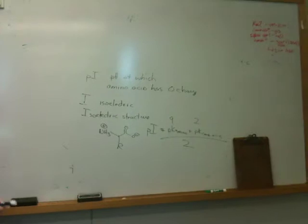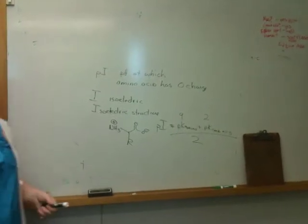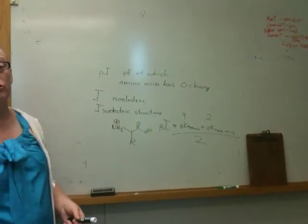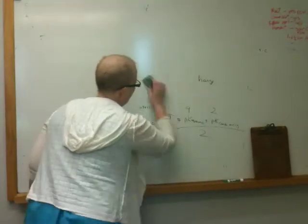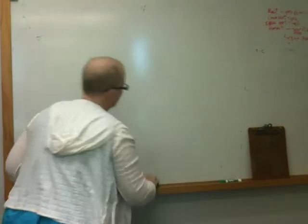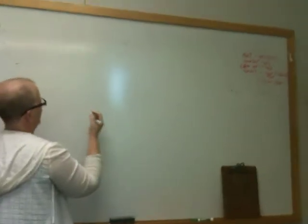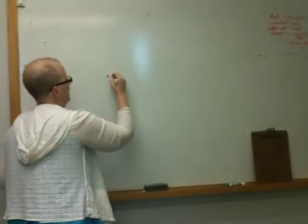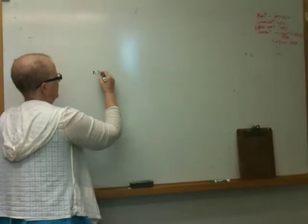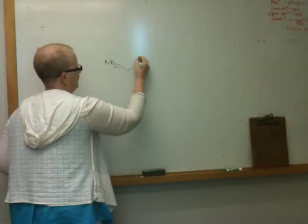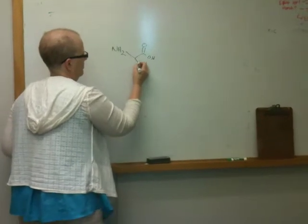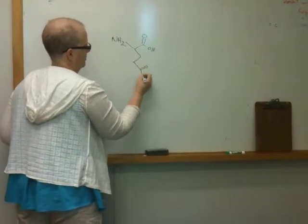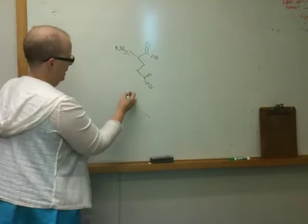Now, what I want to show you is a more complex amino acid and how I would figure out its isoelectric structure and its pI. So, for example, I'm approximating my pKa's here, but for example, supposing I had glutamic acid which has this structure. This is glutamic acid.